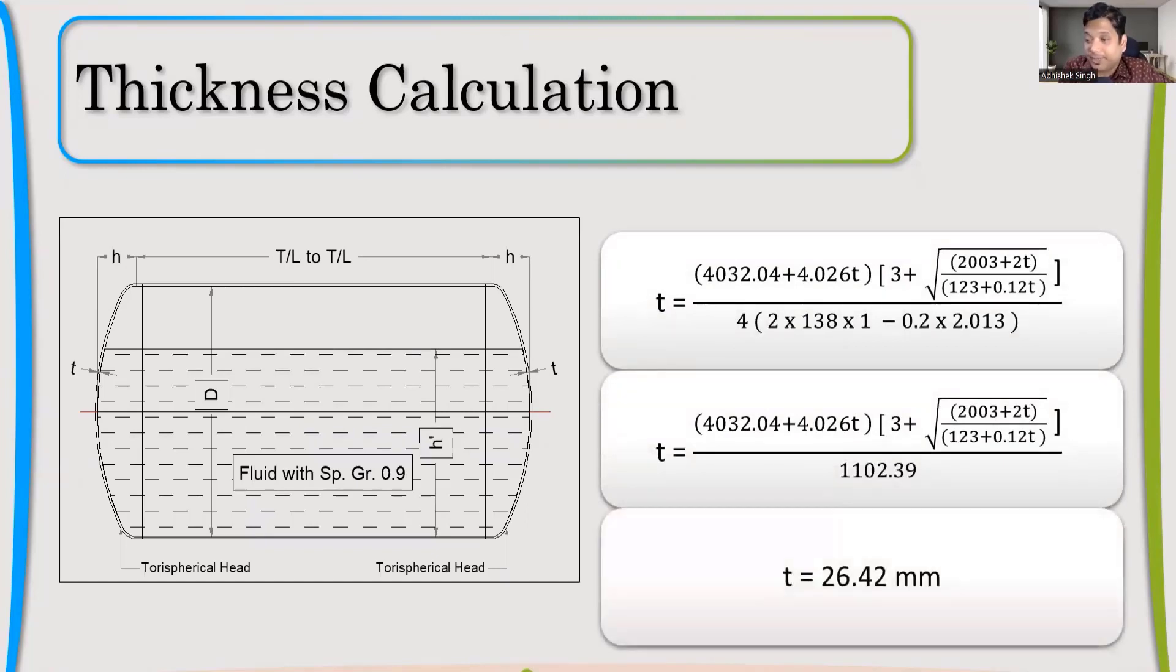Now I'll try to solve this equation. It's a simple equation, don't worry. Finally, I solved it and I got 26.42 as minimum design thickness. This is my minimum design thickness. Now, what should be my nominal thickness?